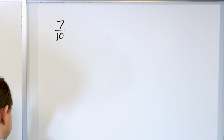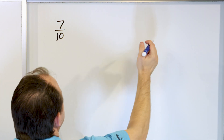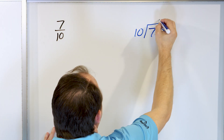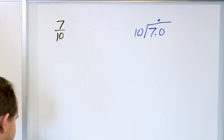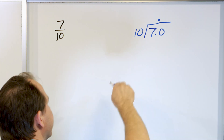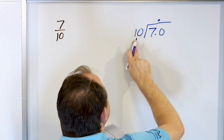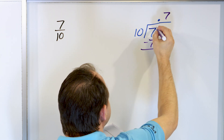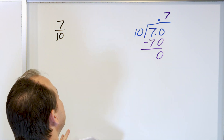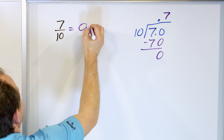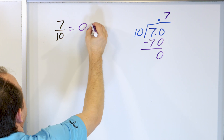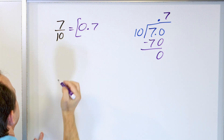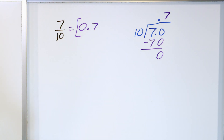What is the decimal equivalent of 7 tenths? We take 7 and divide by 10, making it 7.0 with the decimal above. Ignoring the decimal, 10 times 7 is 70 — subtract, 70 minus 70 is 0. The remainder is zero, so we stop. The answer is 0.7. That makes sense because dividing by 10 moves the decimal one spot to the left, giving us 0.7.